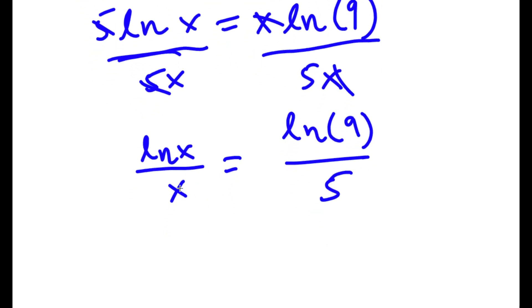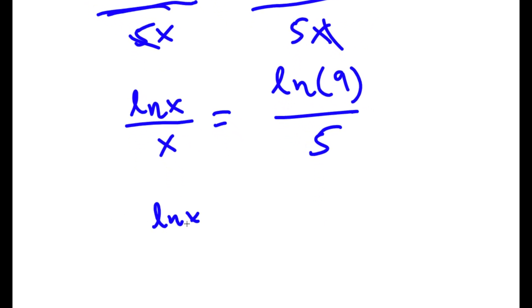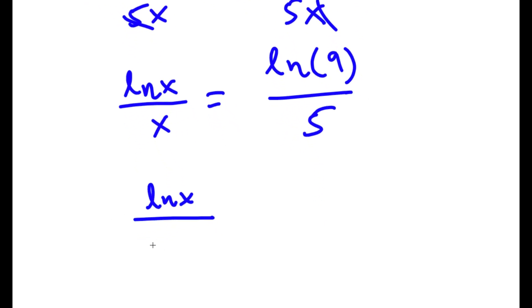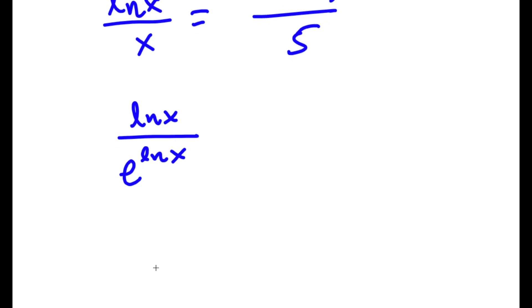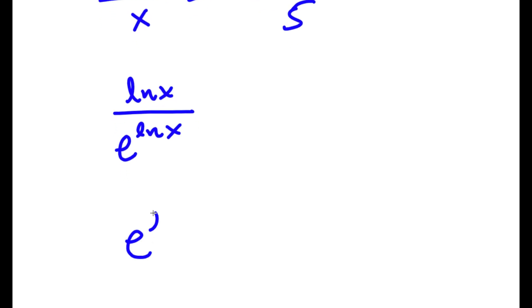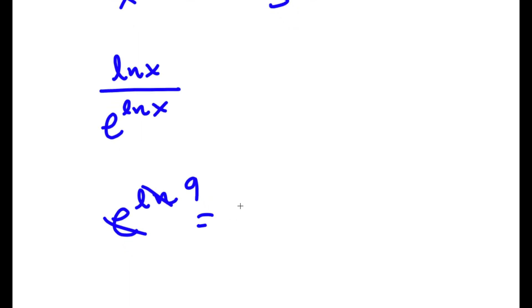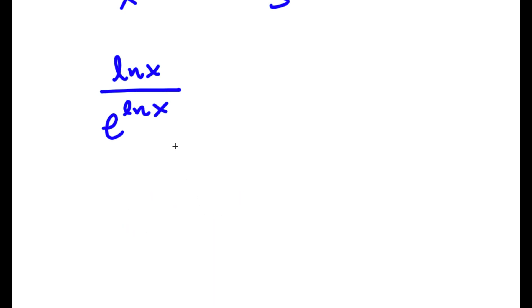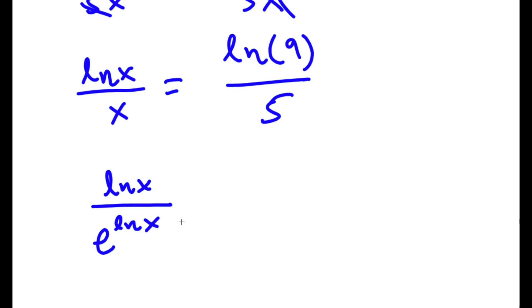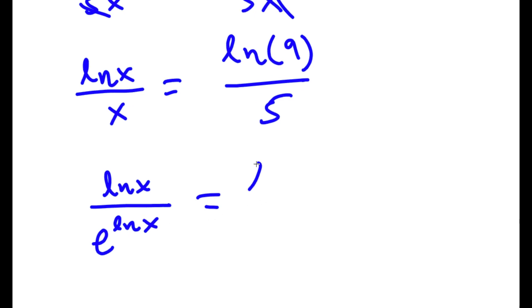Now x here is the same thing as e to the power of ln x. The reason is that e and ln are opposites and they cancel out. So if I take e to the power of ln of something — say e to the power of ln of 9 — these two cancel out and it simply equals 9. So e to the power of ln x simply equals x. This means our equation is now ln x over e to the power of ln x is equal to ln 9 over 5.